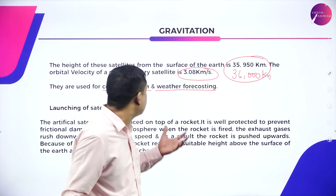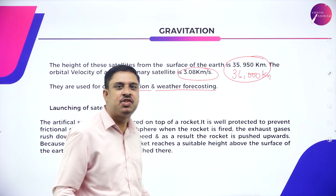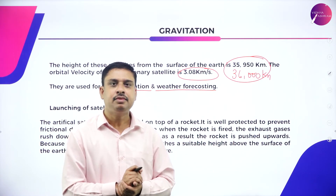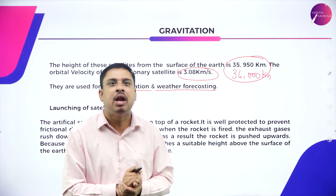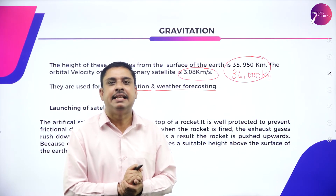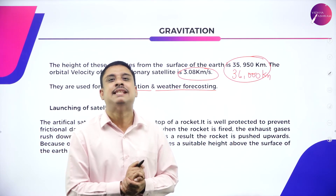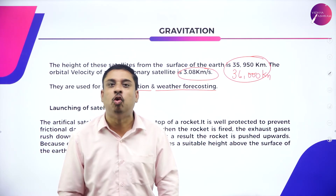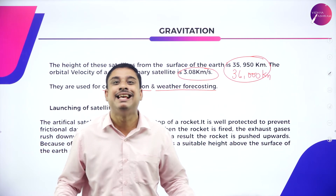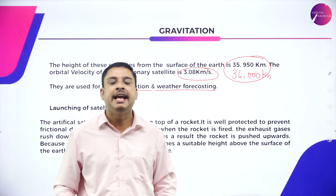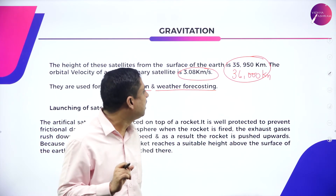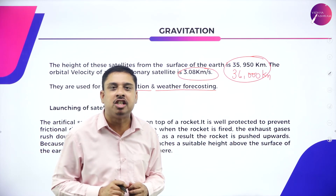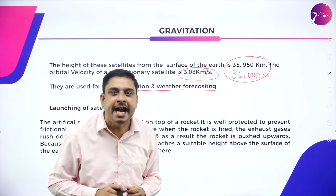The characteristics of geostationary satellites are: they revolve around the earth with the same angular velocity and in the same direction as that of the earth; their period of rotation is 24 hours, making them geosynchronous; their height from the surface of the earth is 36,000 kilometers; and their orbital velocity is 3.08 km/s.